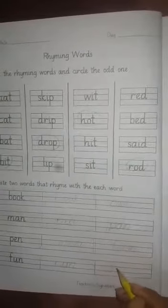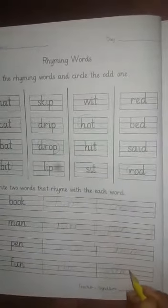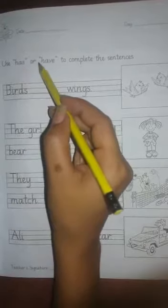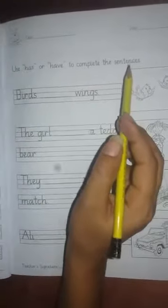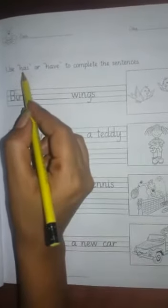Now come to the next page. Write down the date over here and date over here. So students, use has or have to complete the sentences. Has we use with singular things and have we use with plural things.